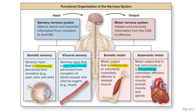Each of those also has two subdivisions. The sensory nervous system can be divided into the somatic sensory and the visceral sensory systems. The somatic sensory system includes sensory input that is consciously perceived by the body — for example, your eyes are consciously aware of what they see, or your ears are constantly aware of what they hear. The neurons involved in those processes are part of the somatic sensory system.